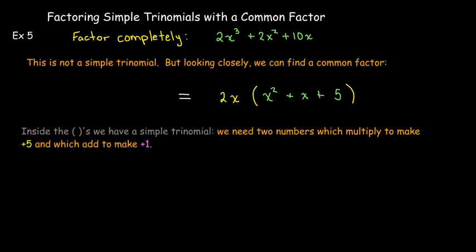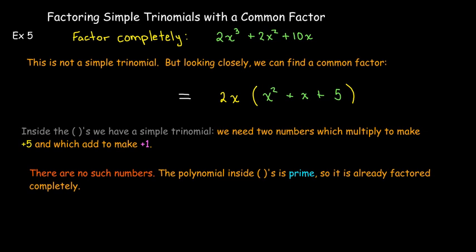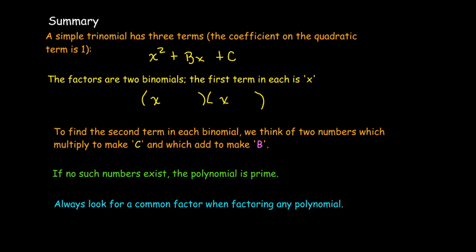There are no whole numbers that multiply to make positive 5 and add to make positive 1. So our conclusion is that the polynomial inside the parentheses is prime — we cannot factor it any further. Our factorization ends with just the common factor 2x.